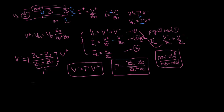We can also calculate the reflected current. The reflected current is going to be equal to V minus over Z naught, but don't forget that minus sign. Using this relationship, the reflected current is just gamma times the incoming voltage divided by Z naught — so you're still multiplying by gamma.